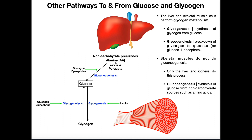One thing worth mentioning about this pathway is that it tends to be stimulated by glucagon and epinephrine. Epinephrine we would see when we're exercising, and glucagon we would see when blood glucose levels fall. Those are the two cases we talked about — when we're fasting we'd see glucagon, or when we're exercising and not resupplementing glucose we would see epinephrine in the blood. Those trigger the liver, and maybe the kidneys, to start making more glucose.